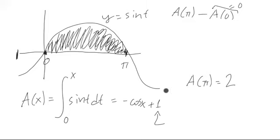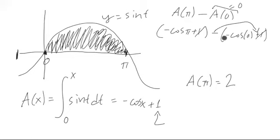If we plug pi into our area function here, we end up getting negative cosine pi plus one. Then we subtract off our A function with zero plugged in, negative cosine of zero plus one. Notice that this one cancels with that one upon the distributing of this negative. And we're left with negative cosine pi plus cosine of zero, which is one plus one, which is two.